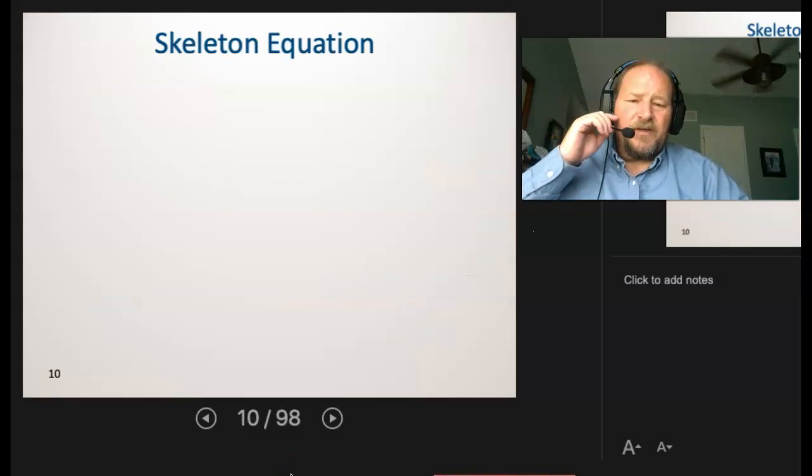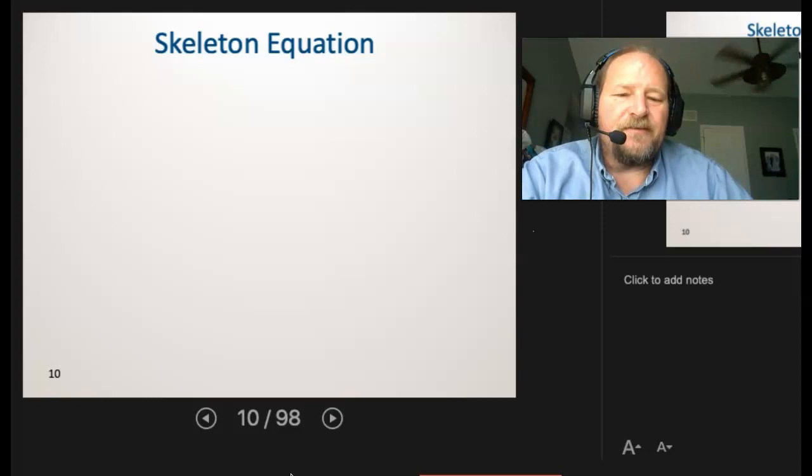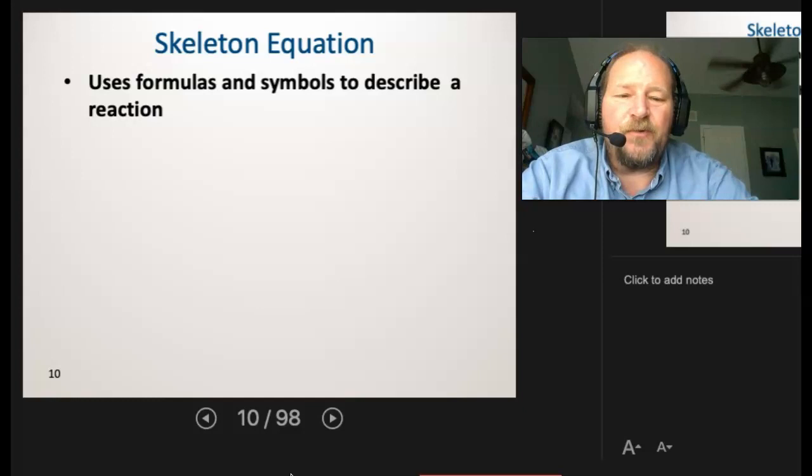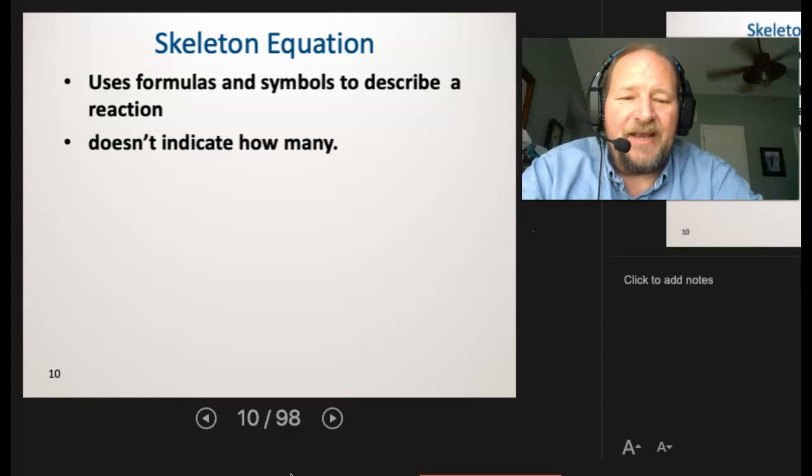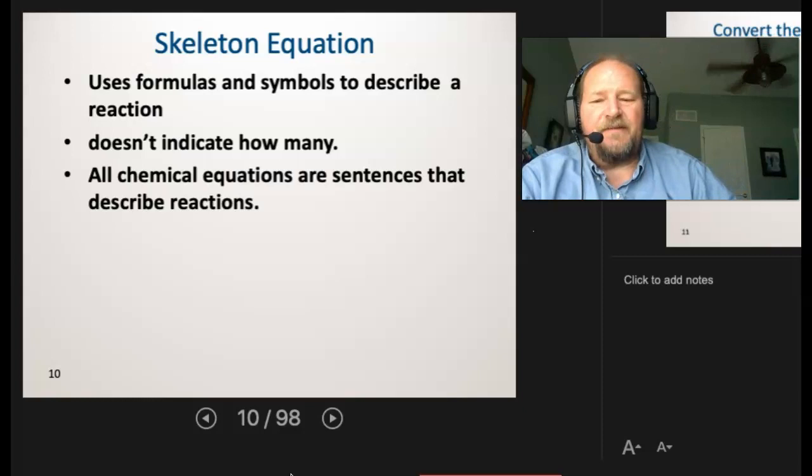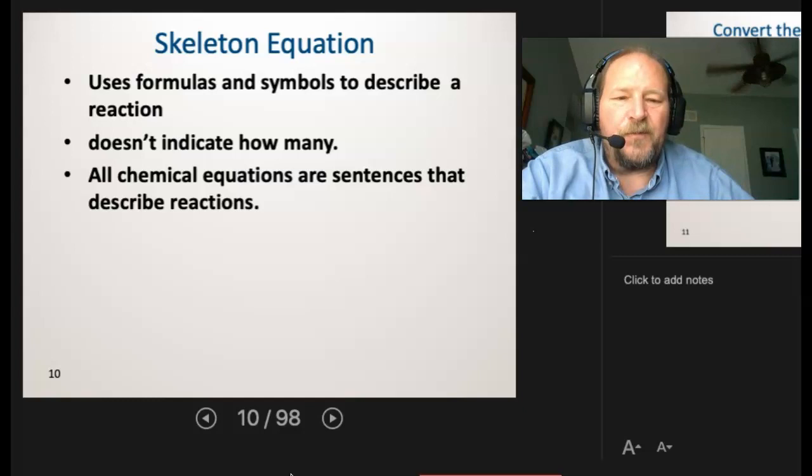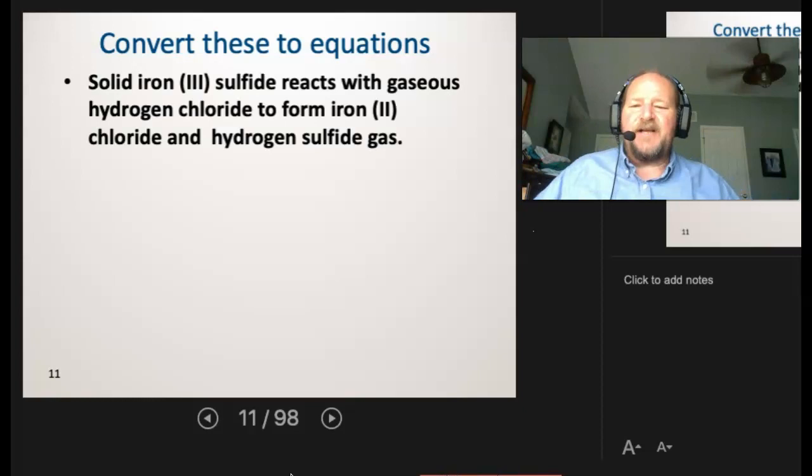All right. Now once we have naming down, we've taken our sentence, and we've turned it into a word sentence, or a word formula. The next thing to do is get rid of the words and go straight to a skeleton equation. So now a skeleton equation is going to use only formulas and symbols. So we'll have no English words, no words at all. Now this won't indicate how many of each thing is there, but it will describe the reaction itself. Remember, all chemical equations are simply sentences that are describing an actual observable reaction.